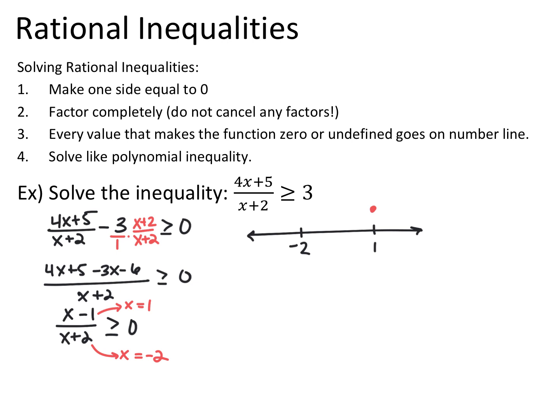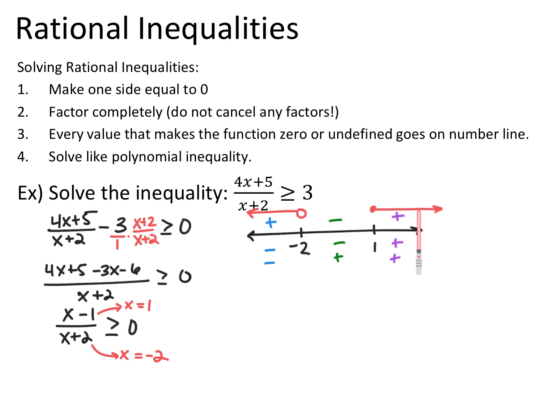Testing points: less than negative 2, choosing negative 10 gives negative over negative — positive. Between negative 2 and 1, choosing 0 gives negative over positive — negative. Greater than 1 gives positive over positive — positive. Since I want where this is greater than or equal to 0, I want the positive sections. The numerator can equal 0, so x equals 1 gets a closed circle. Final answer: negative infinity to negative 2 not included, union 1 included to infinity.